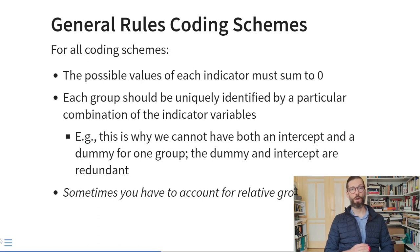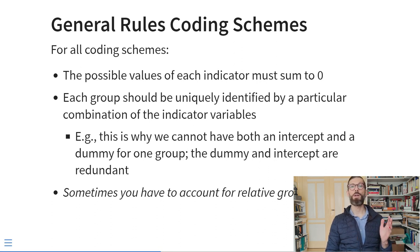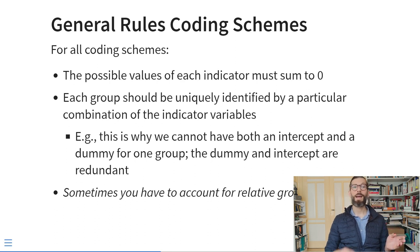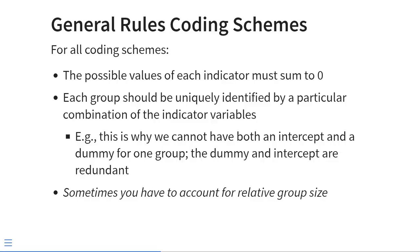The general rules for coding schemes are: the possible values of every indicator must add up to zero, and each group must be uniquely identified by a particular combination of indicator variables. This is why we cannot have both an intercept and a dummy for the reference category — they would be completely redundant. We can exchange the intercept for an additional dummy, but cannot include both. Sometimes we also have to account for relative group size.